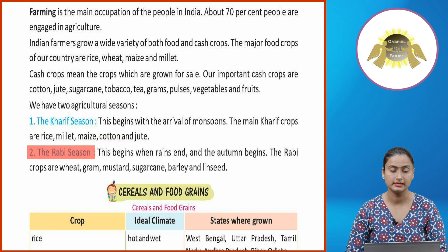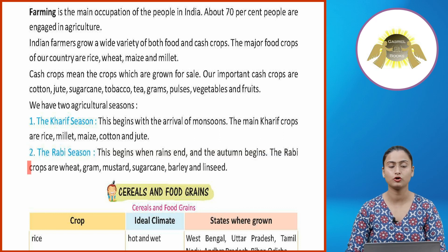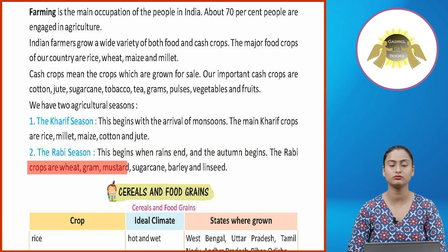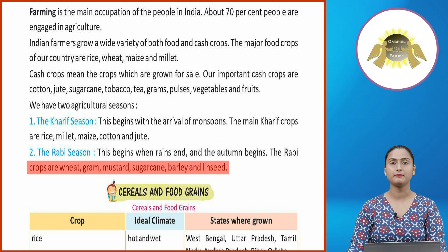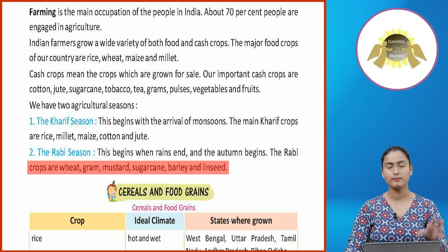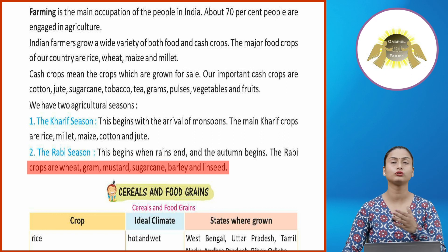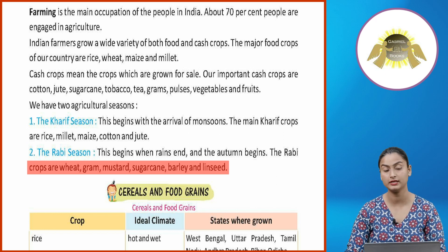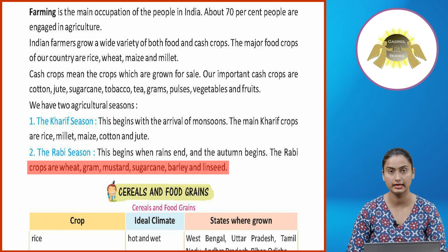Number two, the Rabi season. This begins when rains end and the autumn begins. The Rabi crops are wheat, gram, mustard, sugarcane, barley and linseed.